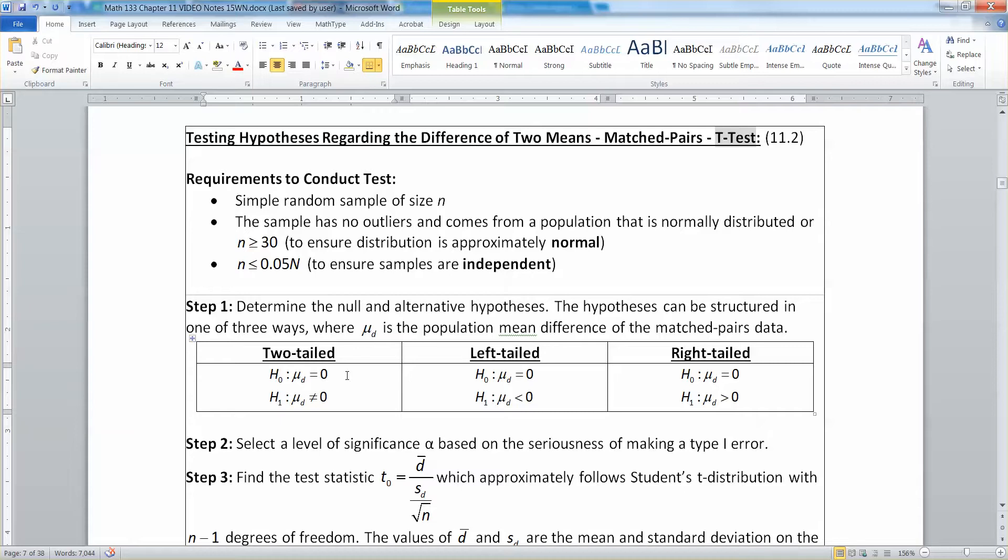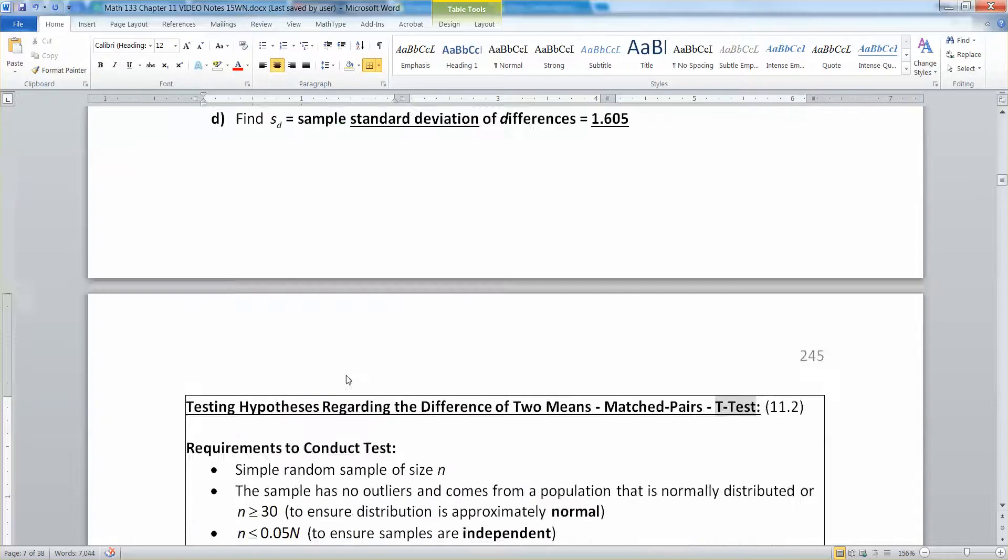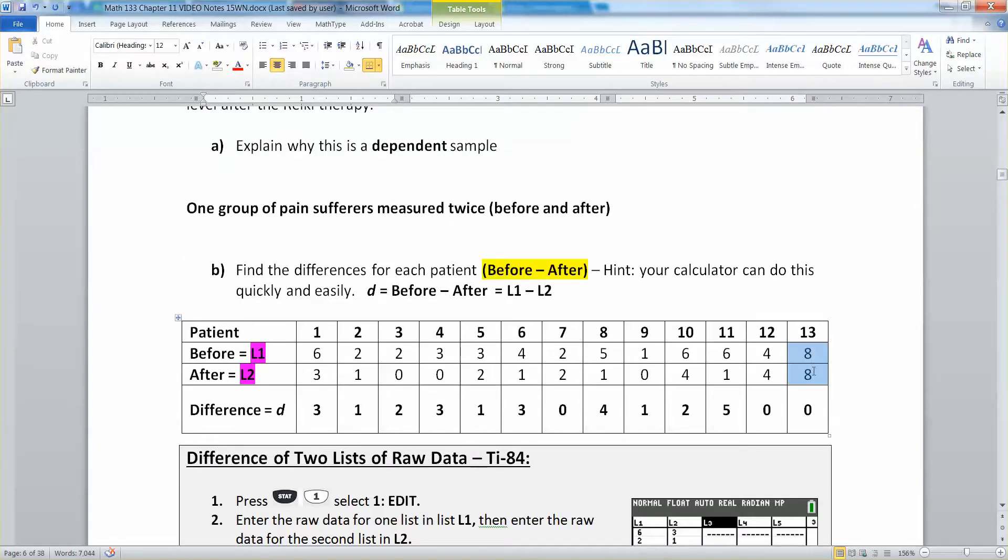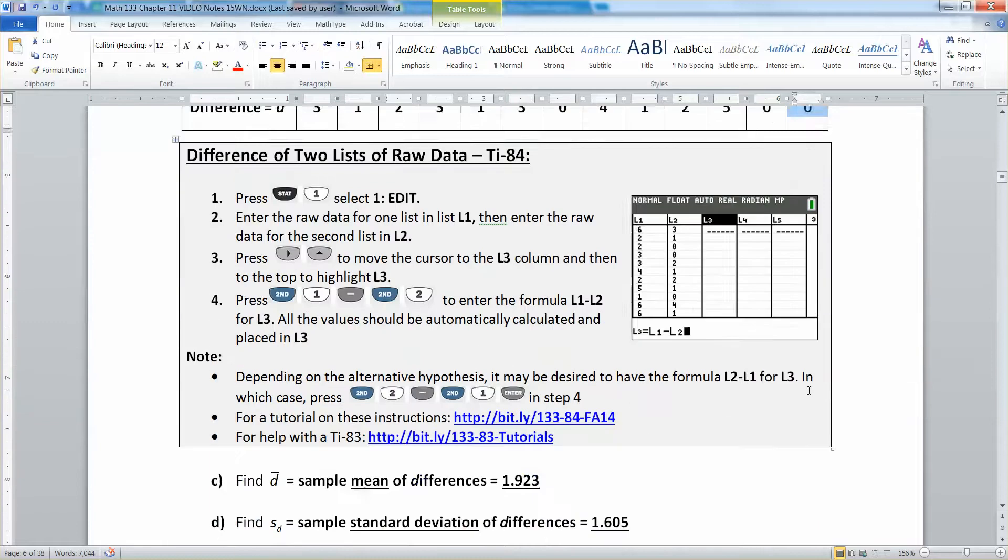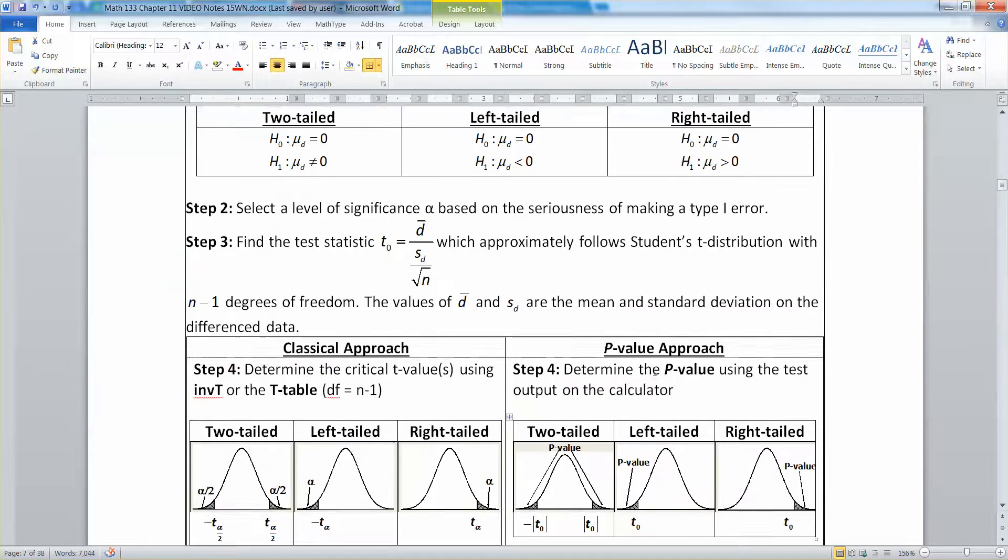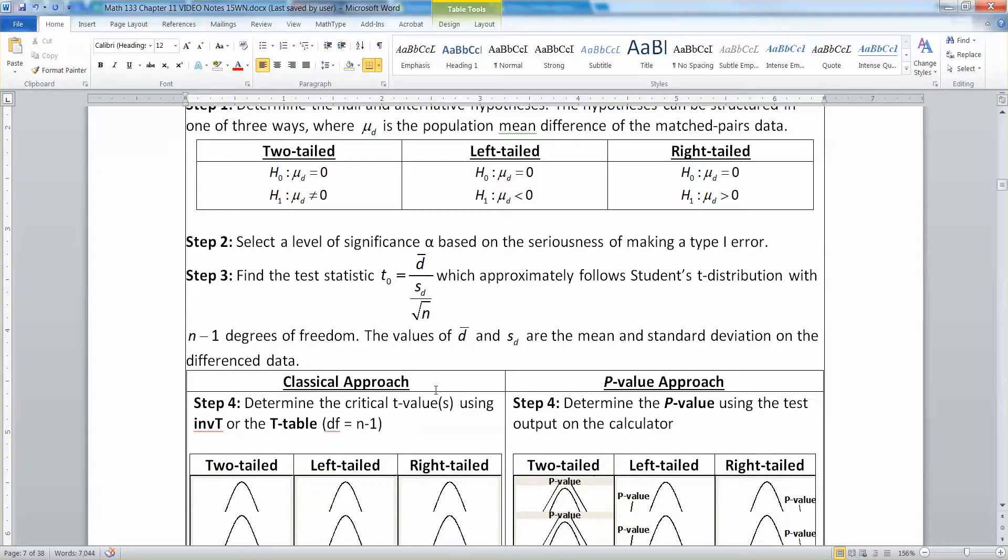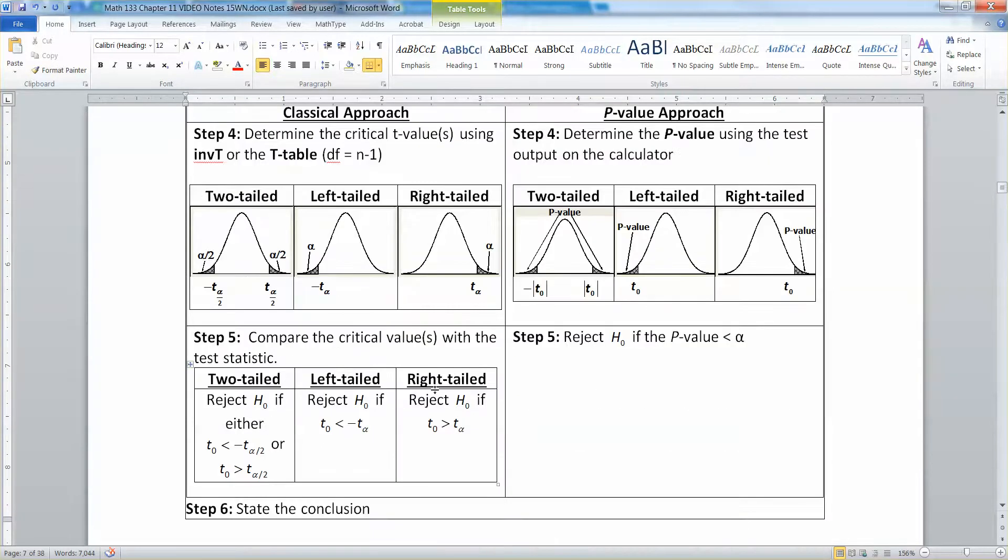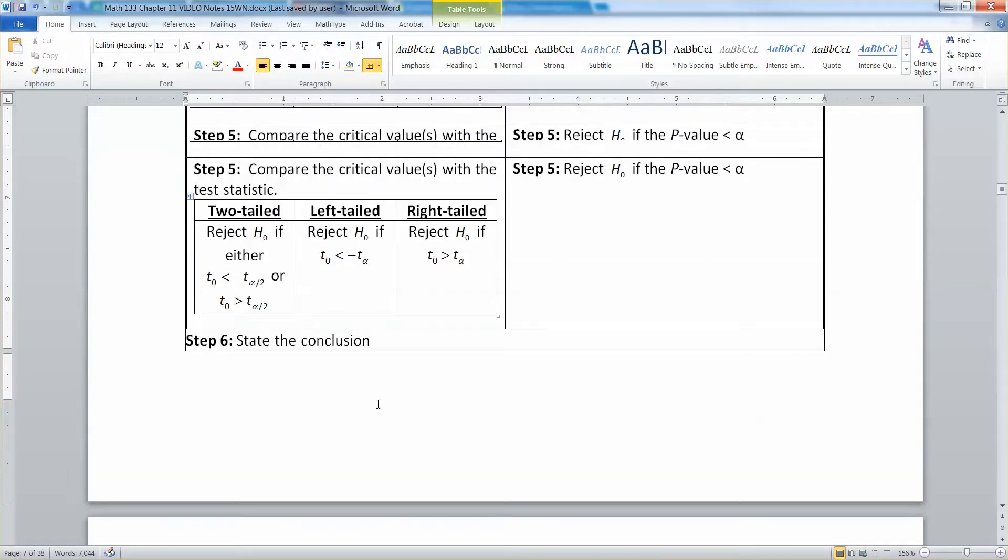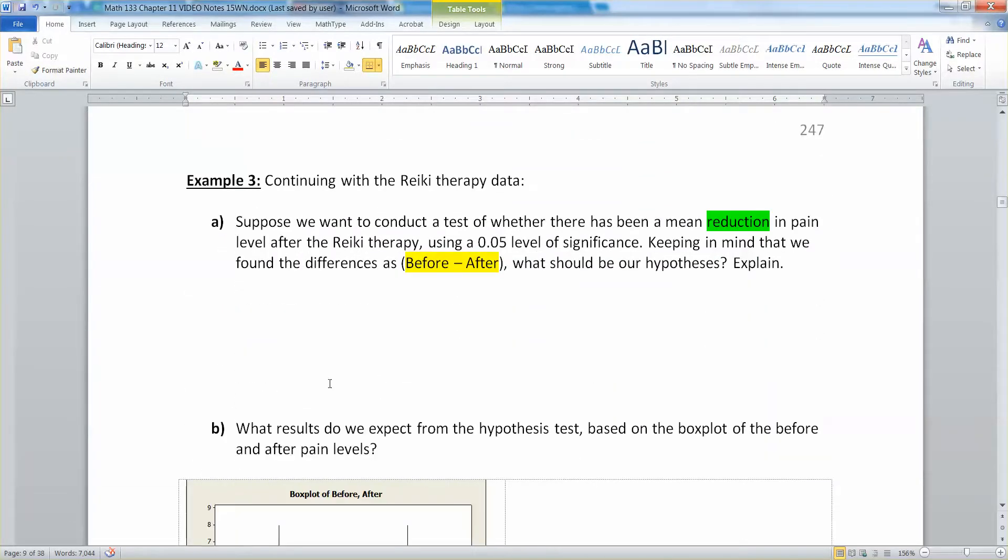You'll notice this looks extremely similar to what we learned in section 10.3. It's just that here we have mu_d equal to zero because it's always zero for matched pairs. So the difference of zero is always your null state. It uses d-bar instead of x-bar and s_d instead of s, but still uses the t-values and t-statistics. Remember, it's right in the inferential statistics packet you get to use on your test.